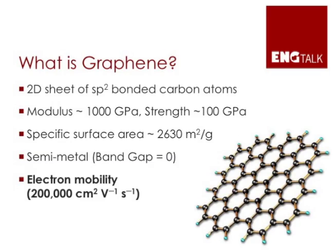So what is graphene? Graphene is an ideal two-dimensional sheet of carbon atoms. The thickness of a graphene sheet is one carbon atom — we're talking about 0.3 nanometers — but the lateral dimensions could be of the order of inches, tens of inches. So it's got an incredibly high aspect ratio.